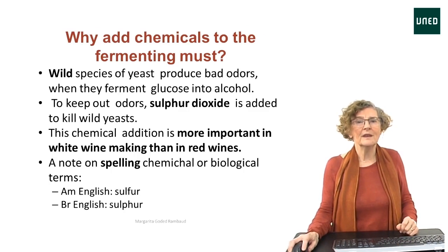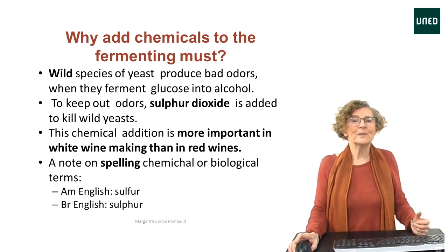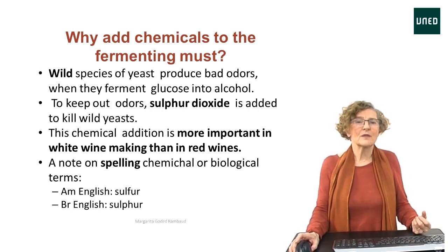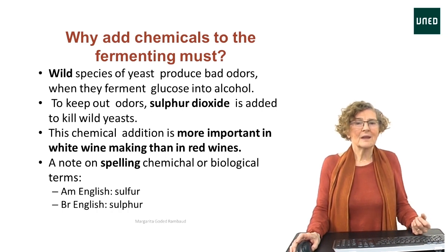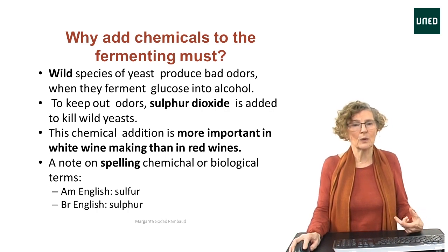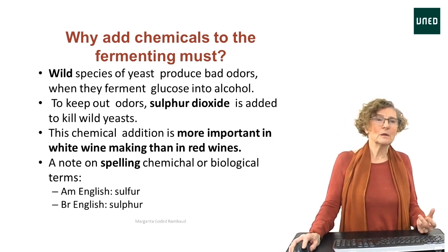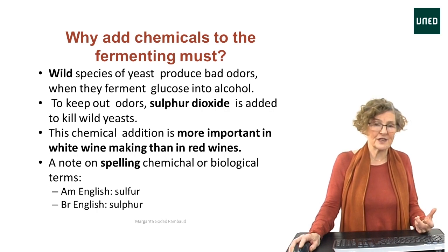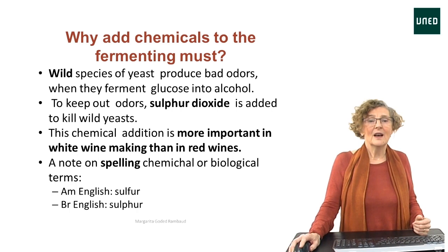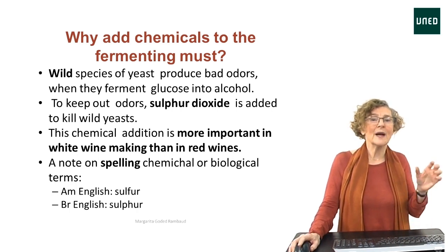While certain species of yeast are often present in the skins of the grapes, they can produce unwelcome odours when they ferment glucose into alcohol. To avoid this, winemakers add a chemical called sulphur dioxide to kill wild yeast — not the good yeast but the bad yeast. This chemical addition is more important in white winemaking than in red winemaking.